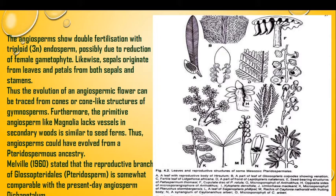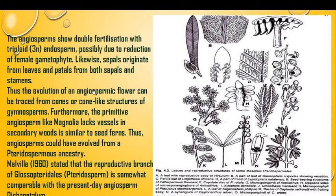Angiosperms show double fertilization with triploid endosperm, possibly due to the reduction of the female gametophyte. Sepals originate from leaves and petals from both sepals and stamens. The evolution of an angiospermic flower can be traced from cones and cone-like structures of gymnosperms, such as strobilus structures which resemble both gymnospermic and angiospermic plants.